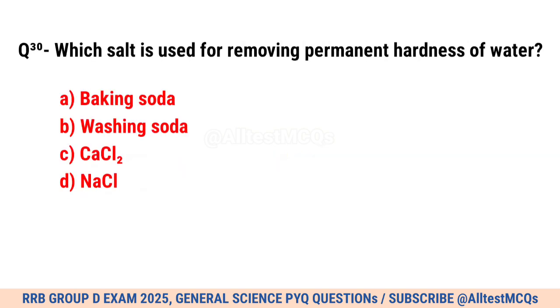Question No. 30. Which salt is used for removing permanent hardness of water? Correct option is B. Washing soda.